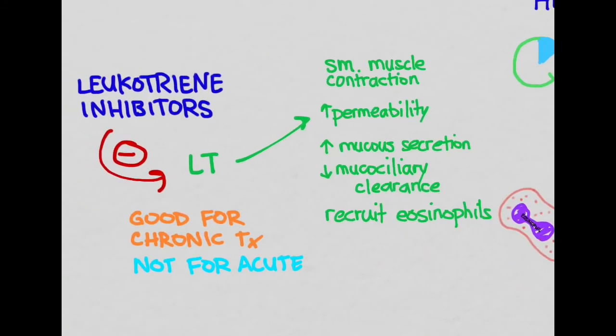And finally, let's look at some drugs that have been shown really not to be too helpful. Leukotriene inhibitors inhibit leukotrienes, which do all these bad things. And so if we inhibit it, we'll hopefully avoid these bad things from happening. And they are maybe good for chronic treatment, but they have not been shown to be helpful for acute treatment.